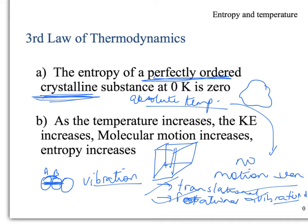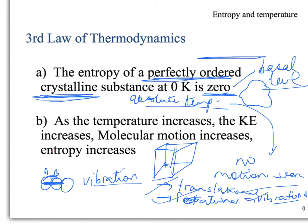If we have no defect and no motion, there is no source of disorder, so entropy should be zero. A perfect crystal structure with no defects at absolute zero — no defect means no disorderliness, and no motion means no randomness. As temperature increases, kinetic energy increases, motion increases, and entropy increases as well.